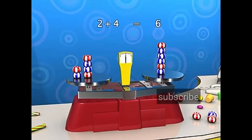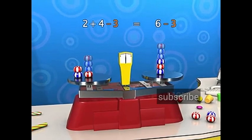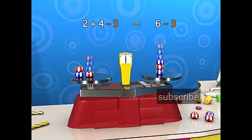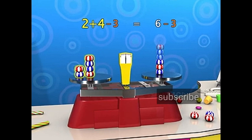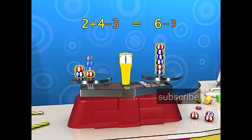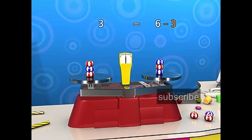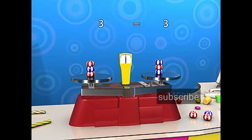If we subtract 3 from both sides of the equation, we get 2 plus 4 minus 3 equals 6 minus 3. Similarly, on simplification, we get 3 equals 3, which is correct.